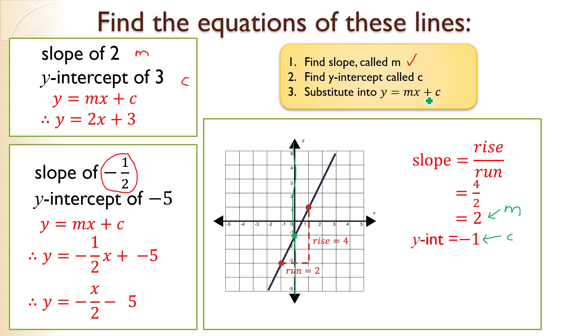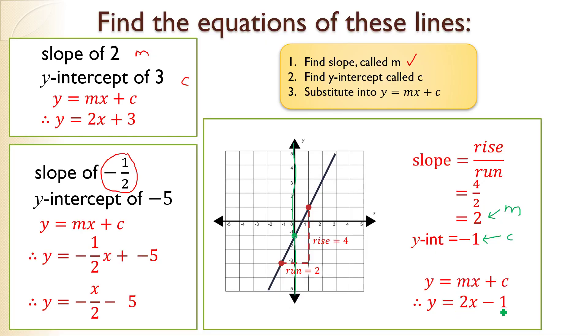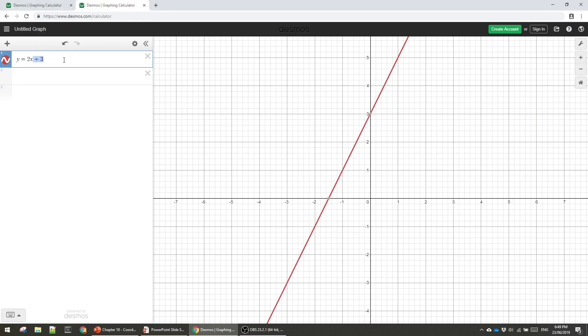Now we substitute into y equals mx plus c. The m is the slope, which is 2, and the c is negative 1. So it's 2x minus 1. It's a good idea to check your answers. But Mr. Neri, how am I going to check the answer? Do I have to draw up a set of axes? No, you can go into Desmos. This is y equals 2x minus 1. Let's write y equals 2x minus 1. Looks like this.